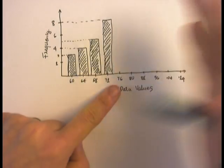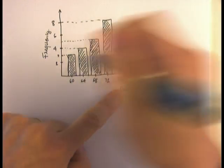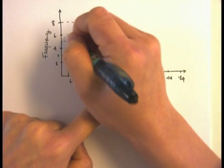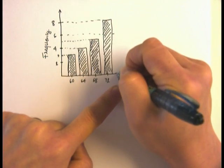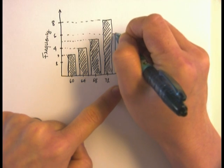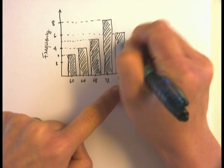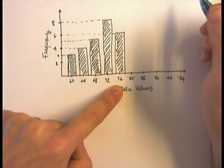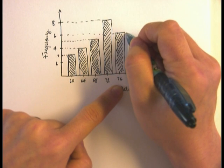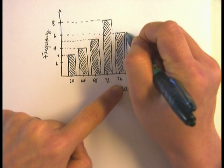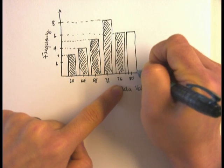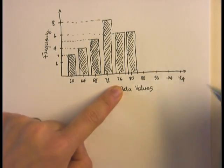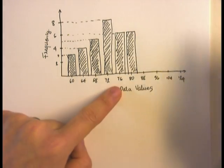76 has six data values, so here is my rectangular bar for 76 that represents 6. Then 80 also has 6, and there is my bar for 80—it also has height 6.